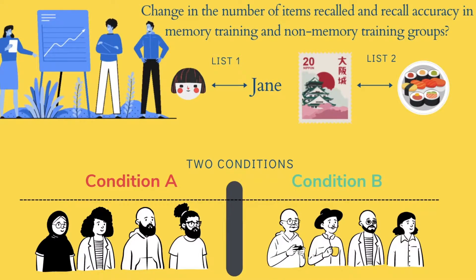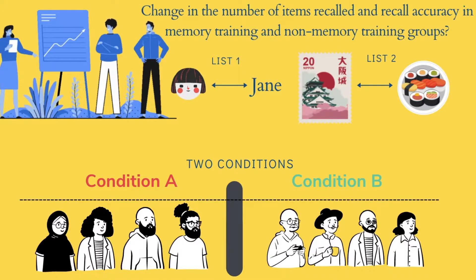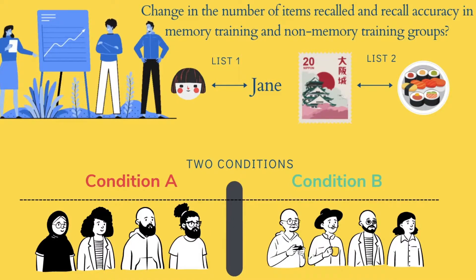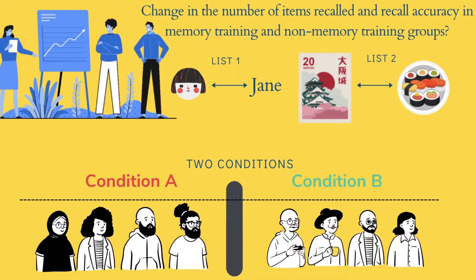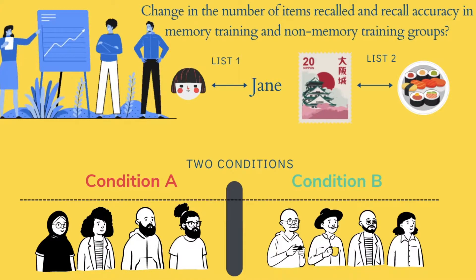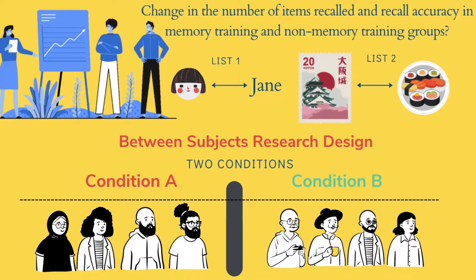Following this, the participants would participate in a recall test in which we would assess their recall accuracy and number of items recalled. The key takeaway here is that in this study there are two different conditions, A and B, and different participants have been recruited in each of these conditions. This is the between-subjects research design.